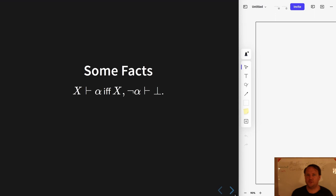In this video I'm just going to mention a couple of facts without proof. The proofs are very easy. So the first proof is that X proves a formula alpha if and only if X together with its negation proves falsum. And X proves negation alpha if and only if X together with alpha proves falsum.